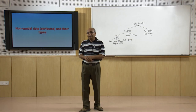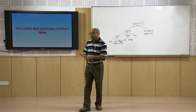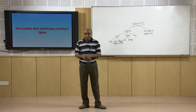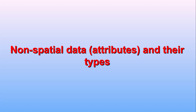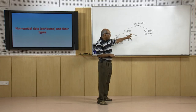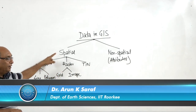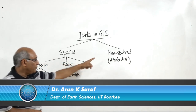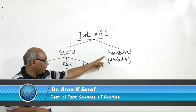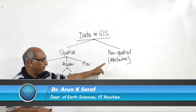Hello everyone. This is regarding the non-spatial data. So far we have discussed that data in GIS can be divided into two main categories: one is the spatial one and another one is the non-spatial one. The non-spatial one is what we will discuss in detail today.